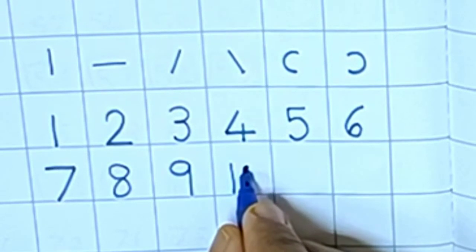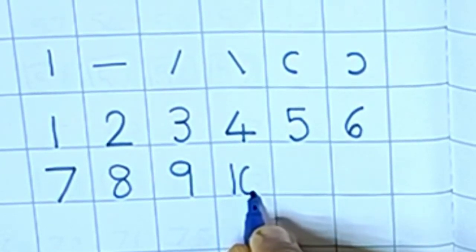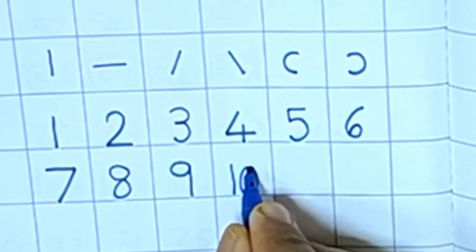Then 9, curve then standing line. Then next number is 10. 1, standing line, and 0, oval shape. Number 10.